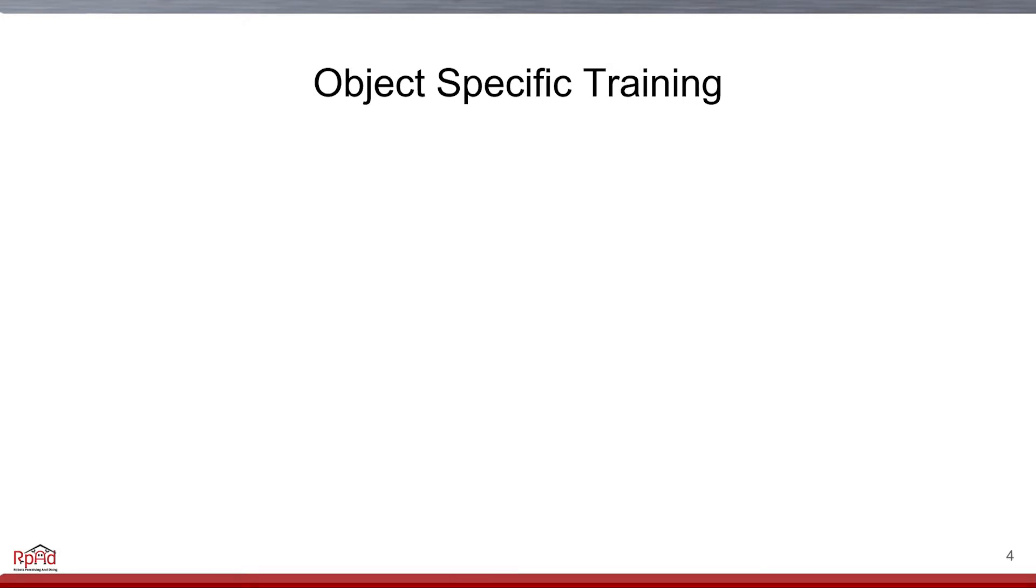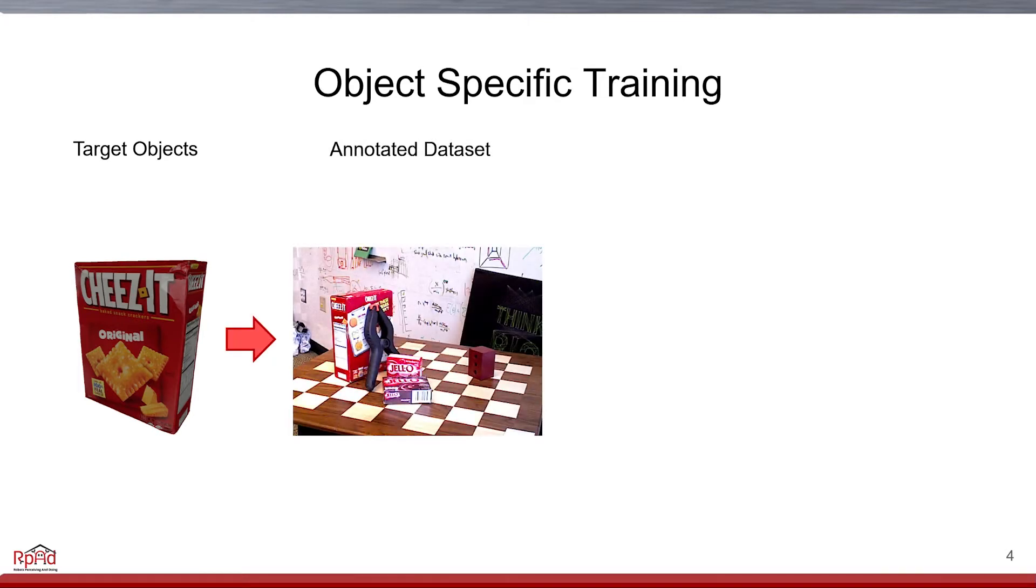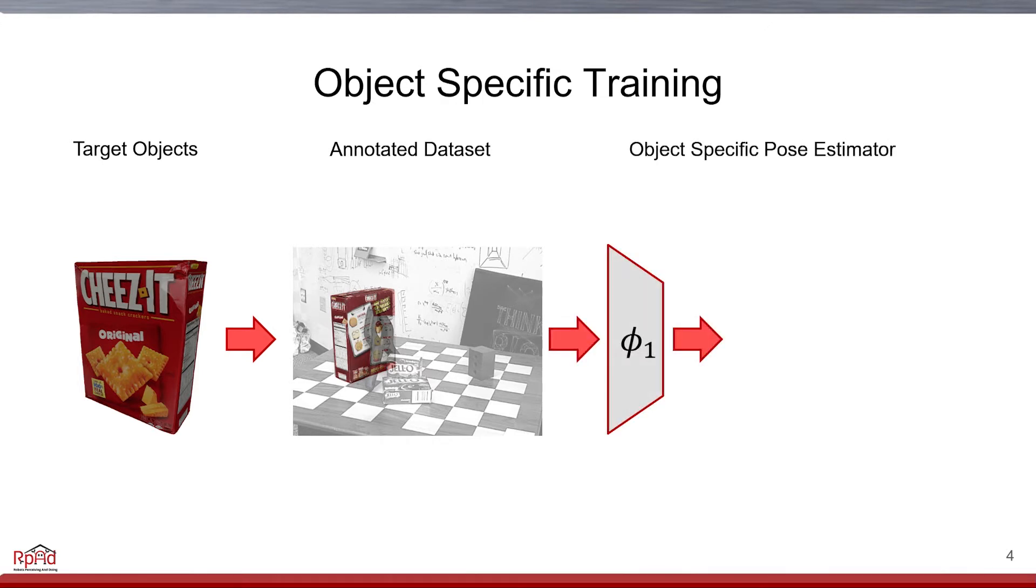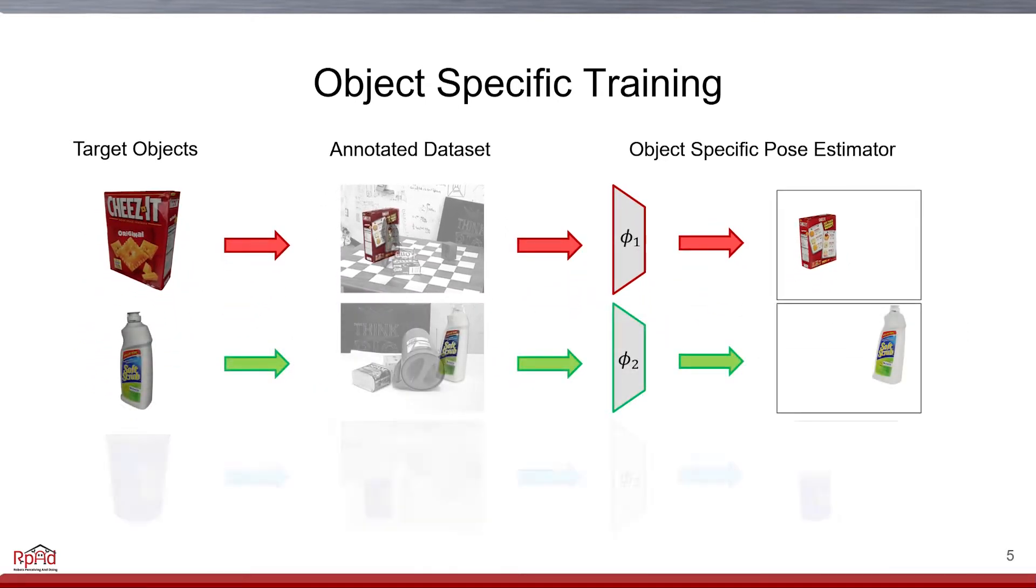Traditionally for this pipeline to work, an object-specific Pose estimator must be trained. This involves defining the object you want to detect, annotating a large amount of data, either through simulation or human efforts, then a set of network weights are learned to find and localize that object. This process is then repeated for every object you plan to interact with.